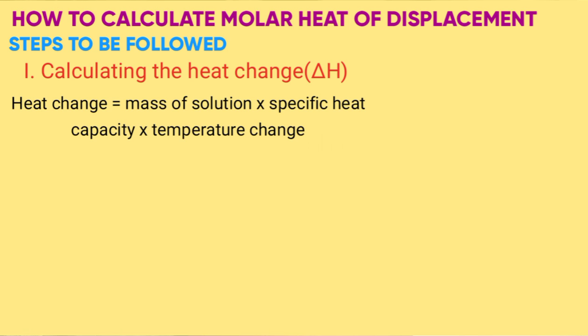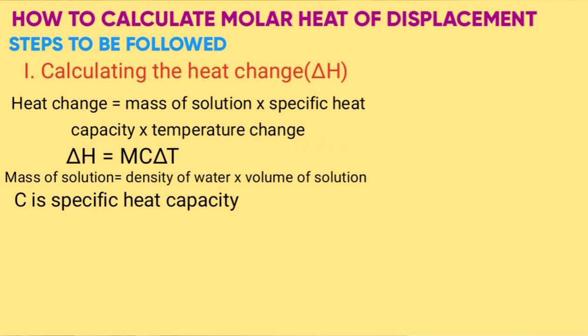In short it is written as ΔH equals MCΔT. The mass of solution will be obtained by density of water times volume of solution, e.g. copper sulfate solution. C is specific capacity given by either 4.2 kJ/kg/K or 4.2 J/g/K.